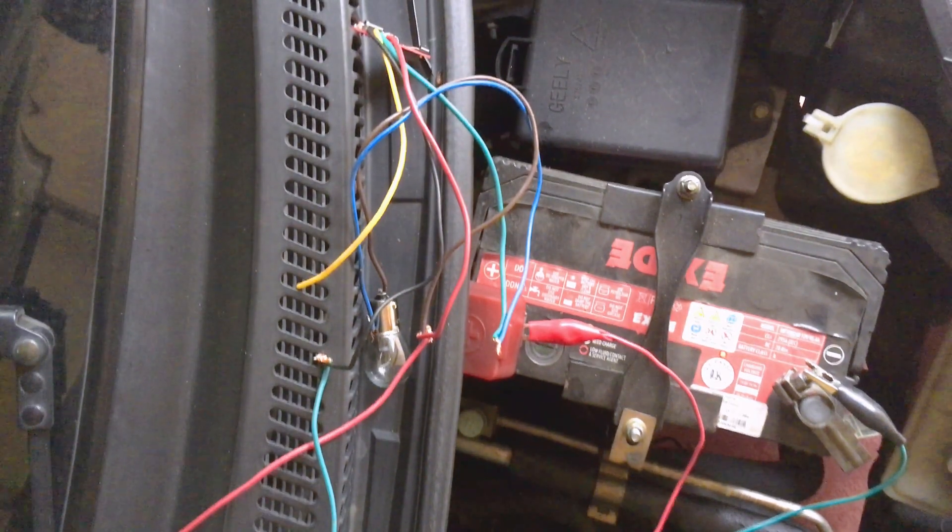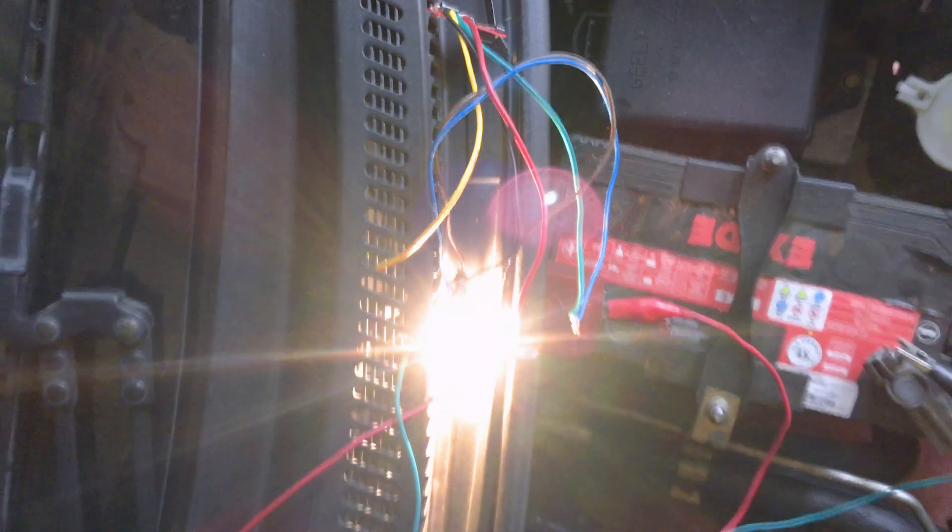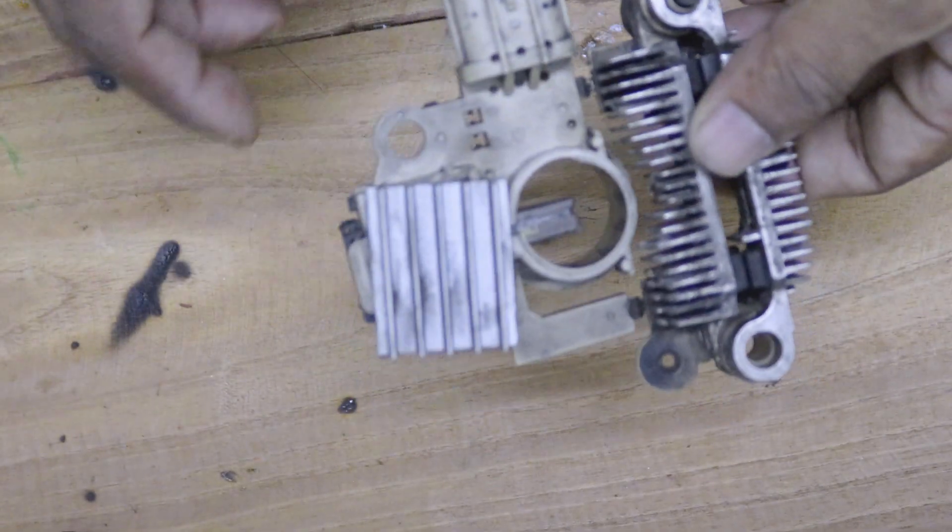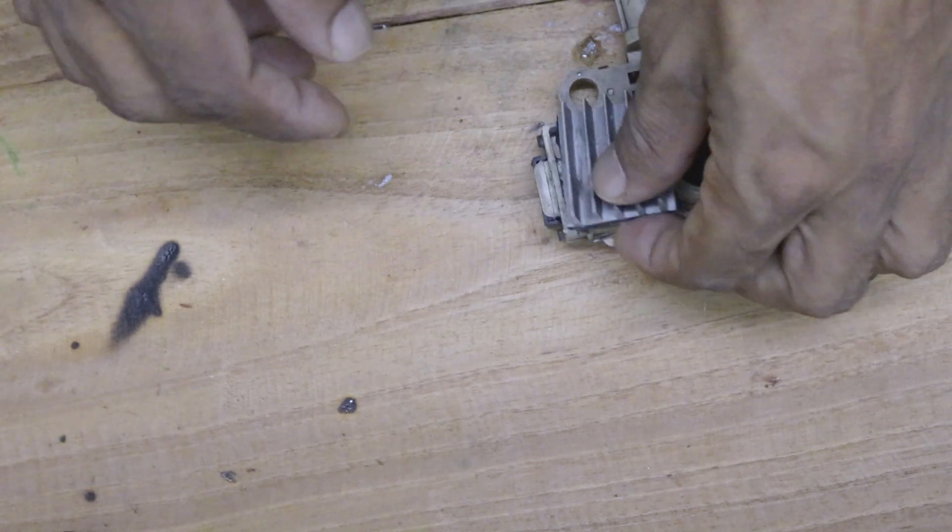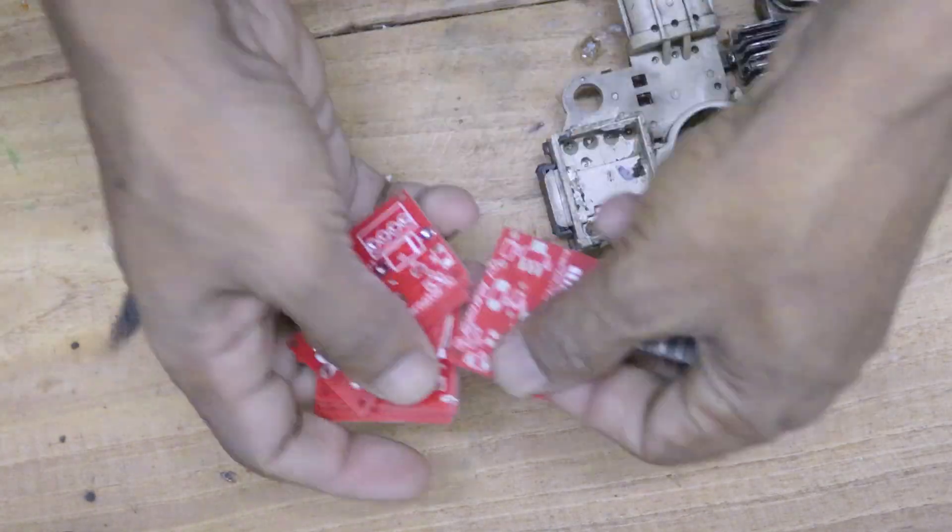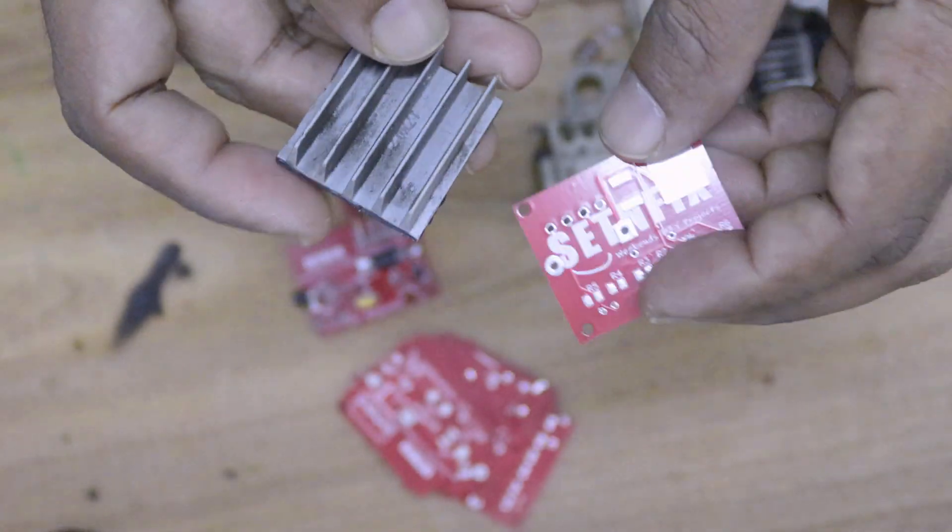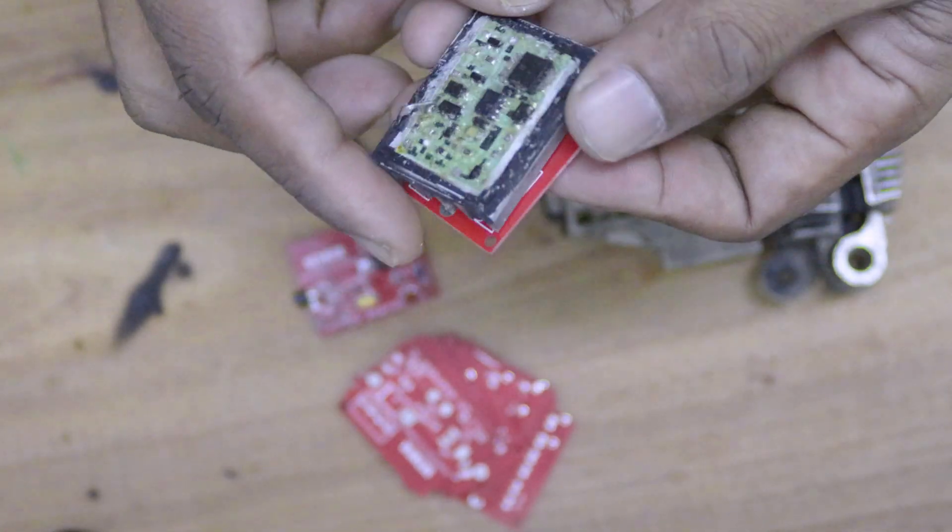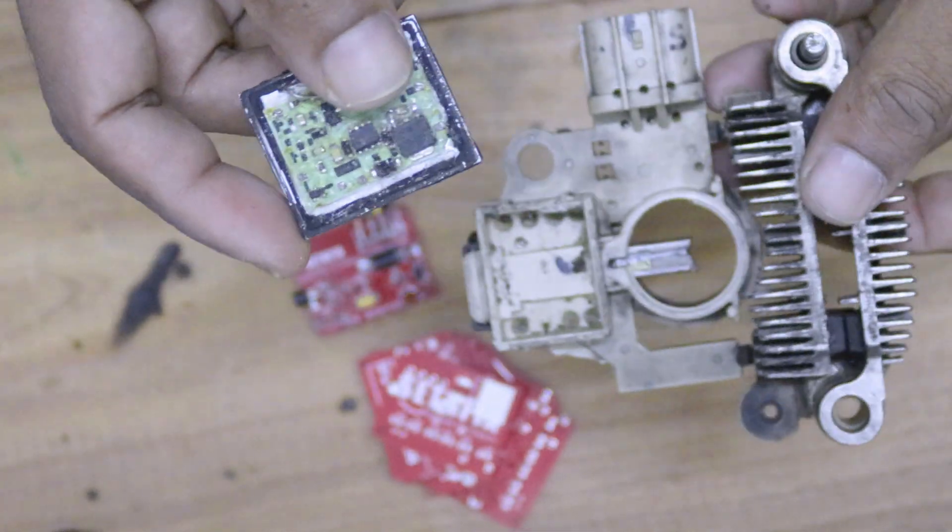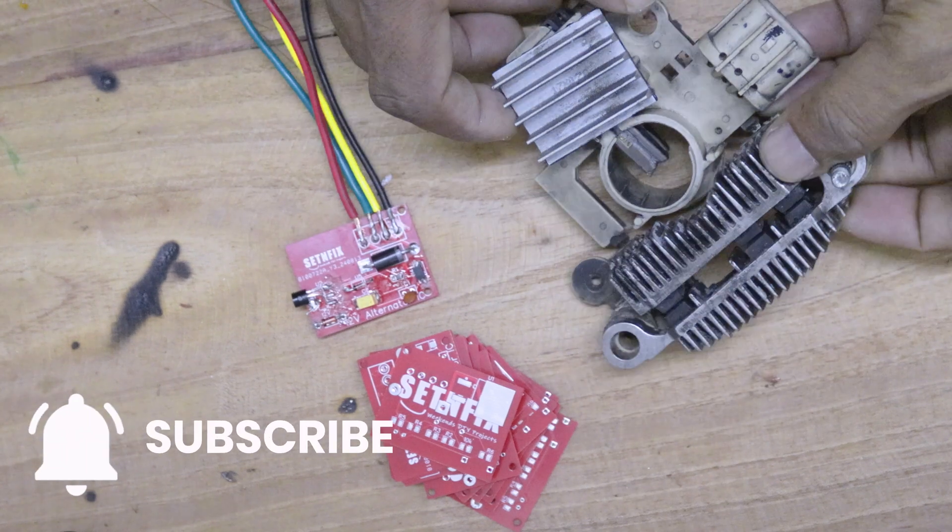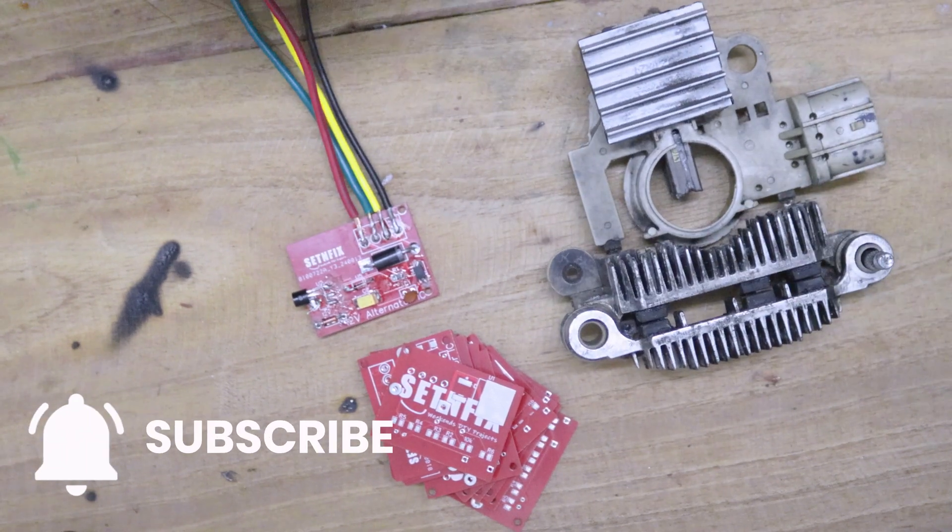I hope this helps you understand how the alternator IC works. This circuit functions perfectly for a 12V battery alternator. As I explained at the beginning, you now know the solution for a burnt car alternator IC. You can use this circuit as a replacement instead of buying a new alternator or IC. In the next video, I'll show you how to install this circuit in the alternator and demonstrate its operation. If you found this video helpful, don't forget to subscribe to my channel. Be innovative and stay with SetnFix.